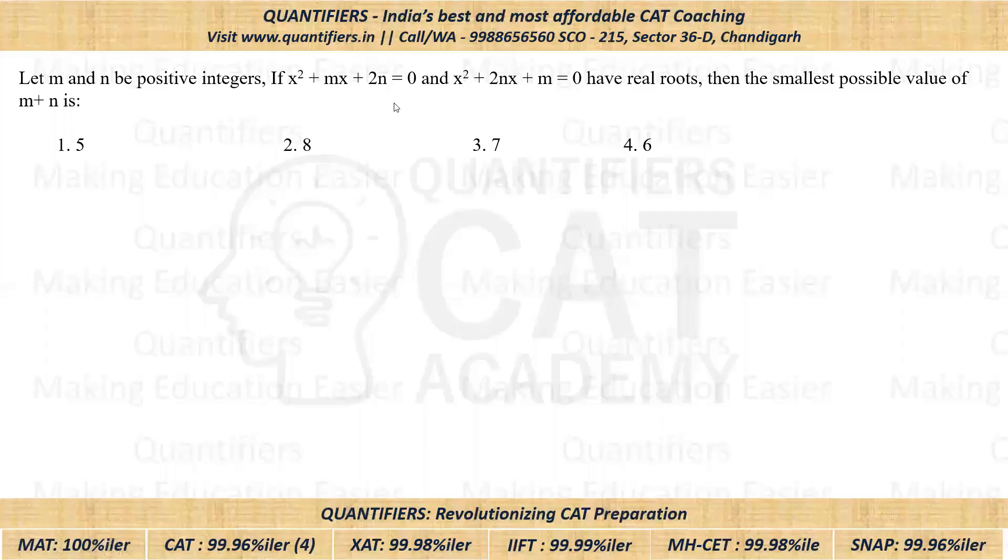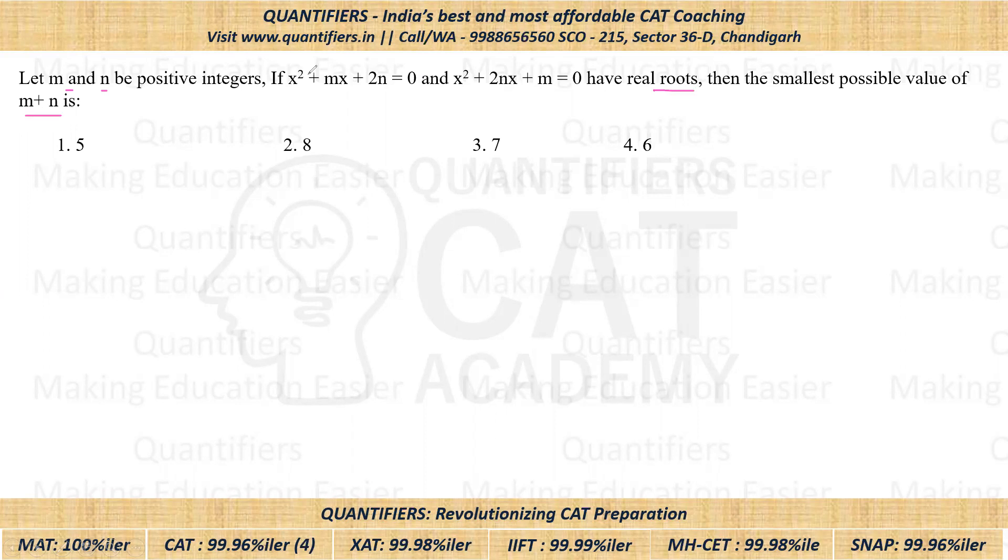Okay students, now let us come to the question. Please pause the video and give this question a try. It is given that M and N are positive integers and we have two quadratic equations which are having real roots. We have to find smallest possible value of M plus N.